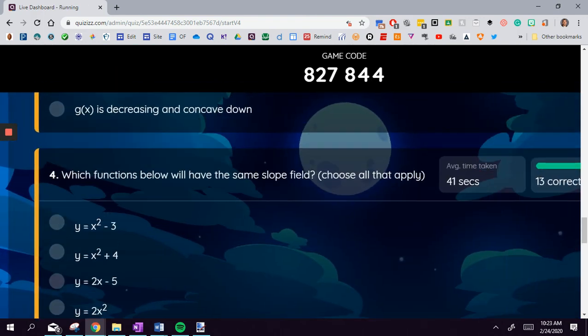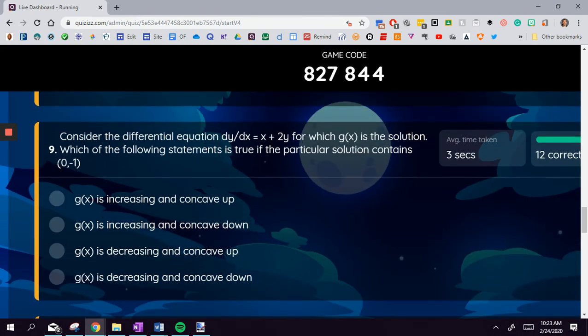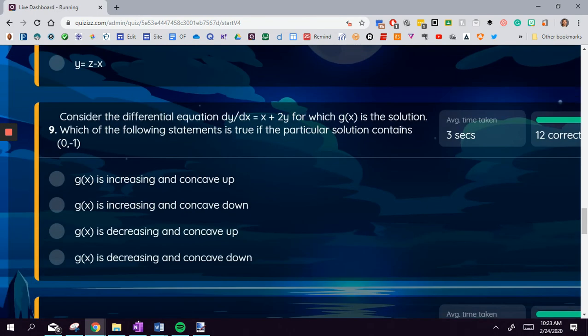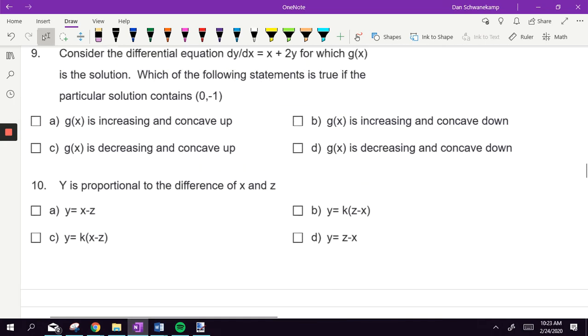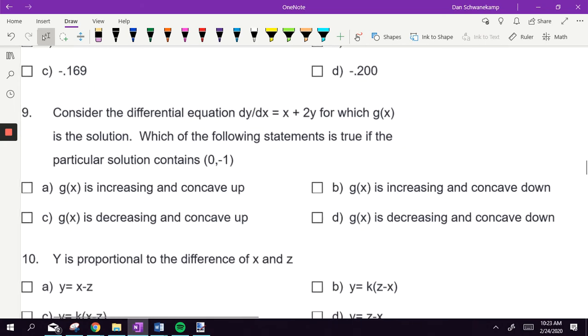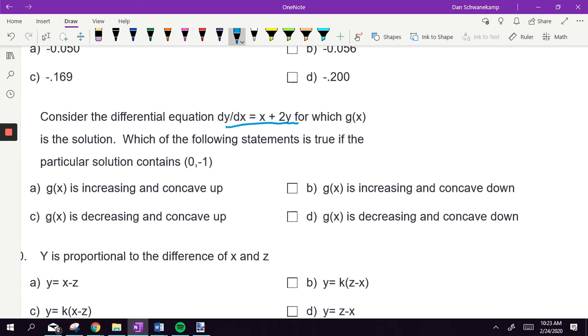Let's try one more, find another one we weren't great at. Let's do this one, number nine. Consider the differential equation dy dx is equal to x plus 2y. Which of the following statements is true for the particular solution containing 0 negative 1? They're asking about increasing or decreasing and concave up or concave down. What am I looking for in a function to decide if it's increasing or decreasing? The derivative. They told me the derivative dy over dx is equal to x plus 2y. They told me a point, so what am I going to do with that point? Plug it in. So I get 0 plus 2 times negative 1, dy over dx is negative 2. Is it increasing or decreasing? Not that one, not that one, it's decreasing.